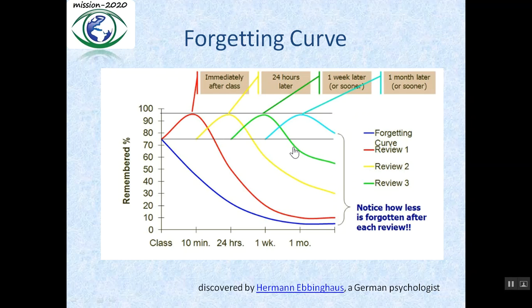Now let us see what happens after 1 month. Look at the green curve — you see that after 1 month you can remember 60%. But if you revise within 1 month again, just see this cyan curve — you can still remember up to 95% again.